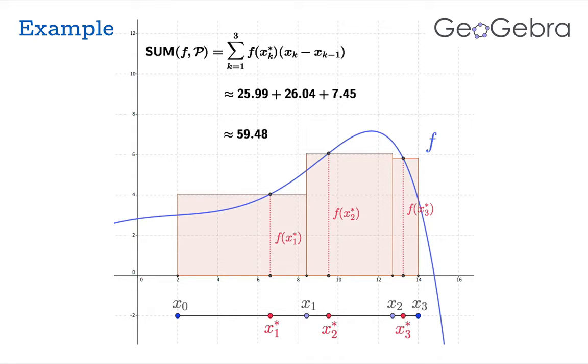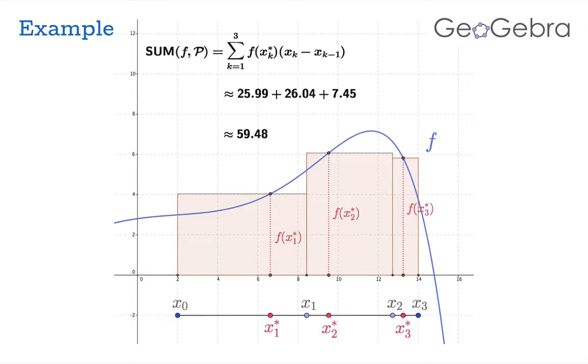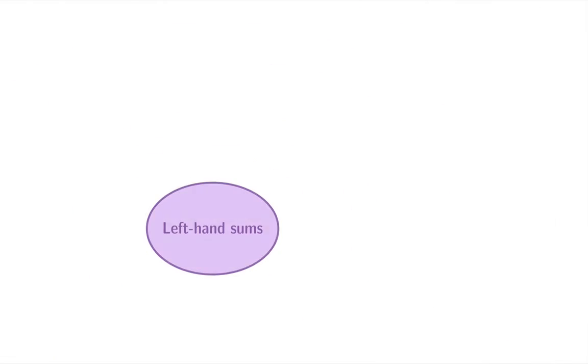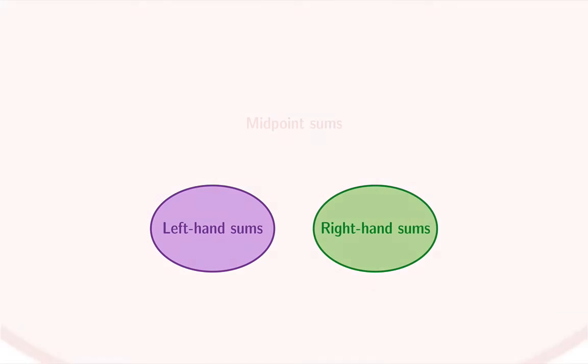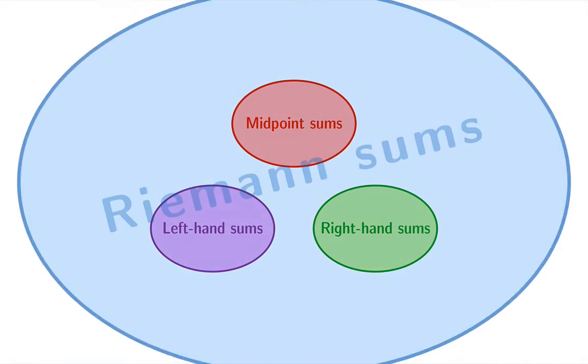All this is meant to indicate to you that Riemann sums do not need to be at all regular so you can get very exotic looking Riemann sums. They don't all have to be midpoint sums or left-hand sums. So the bigger point is that left-hand sums, right-hand sums, and midpoint sums are just special cases of Riemann sums.